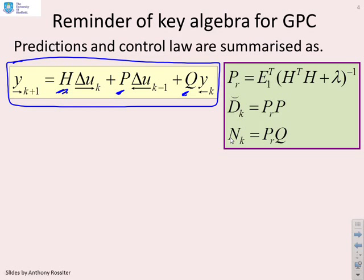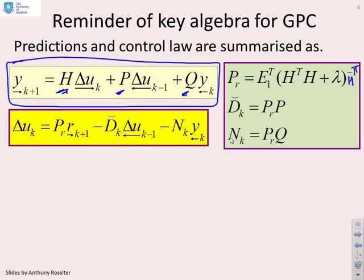Then, you can find the control law parameters using this algebra here. And I think there's an H transposed missing there. I apologize. Once you've done that, you'll notice that the control law is given by this particular formula here. And this is the control law you would use to implement GPC.